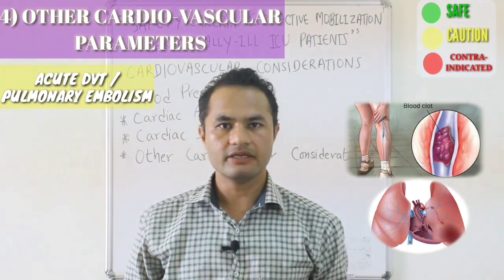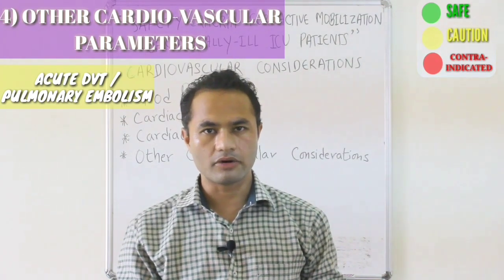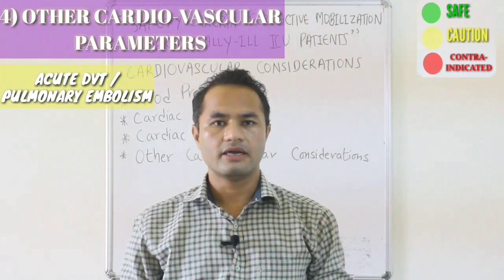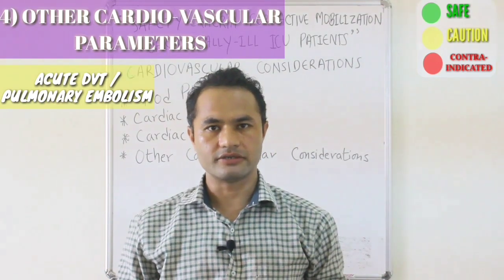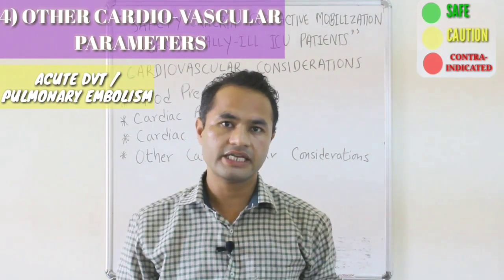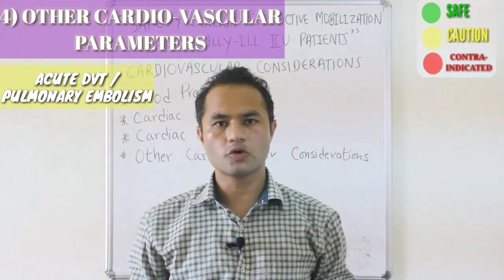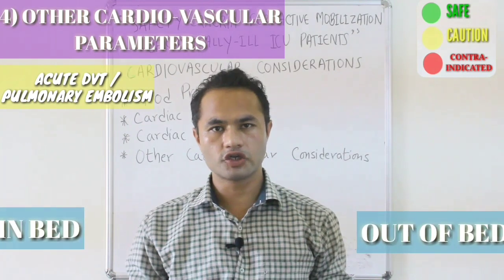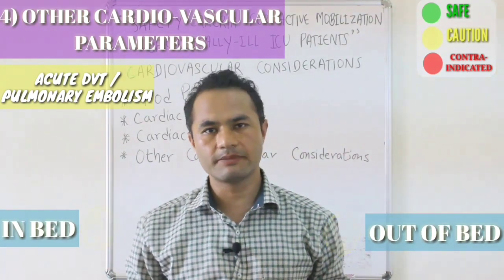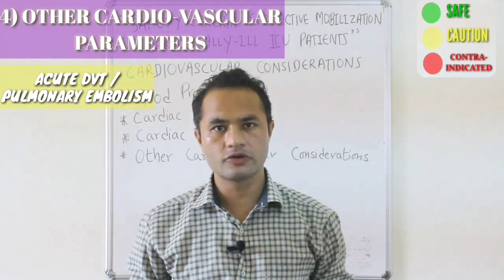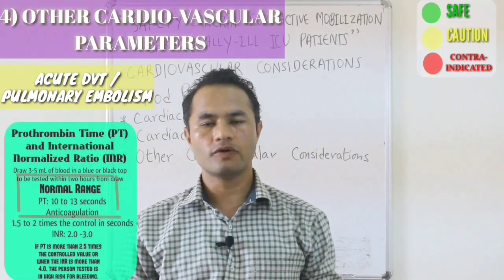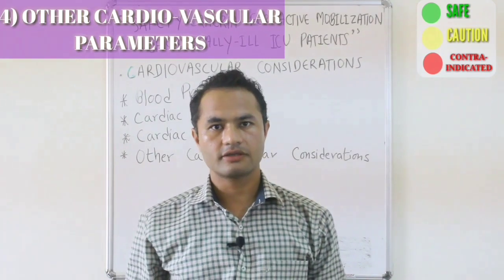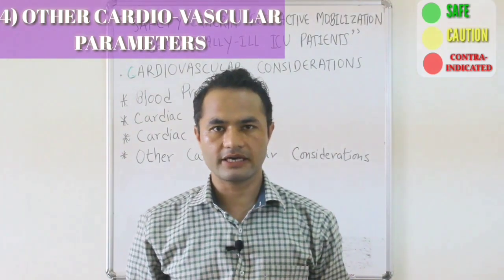Acute DVT or pulmonary embolism within 24 hours are hemodynamically unstable conditions, and any exertion may further aggravate hemodynamic instability. Patients with acute PE or DVT should be mobilized under sufficient medical supervision, and physiotherapists should review the PT INR report to confirm the patient is on anticoagulant therapy.